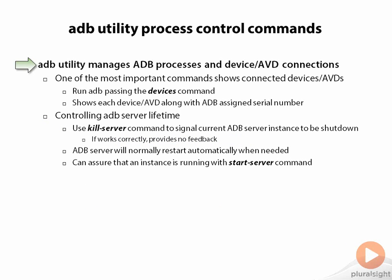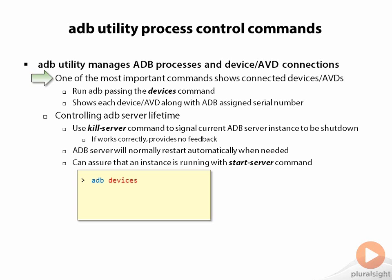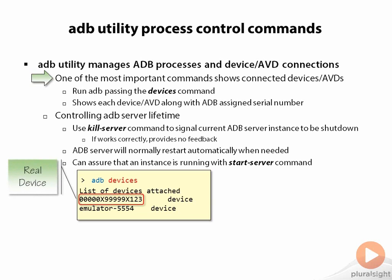If we look at the commands related to controlling processes and devices, the command you'll most often use with the ADB command line utility is the devices command. That indicates what devices or virtual devices are currently connected to your desktop. If you open up a Windows command line and type ADB devices, it will come back and give you a list of all the currently running emulators and connected devices on your machine. Looking at the results, the first entry with that list of alphanumeric characters shows it's a real, physical device — those characters are the ADB-assigned serial number. For an emulator, the serial number always starts with emulator-hyphen.